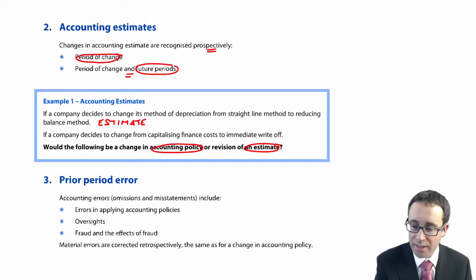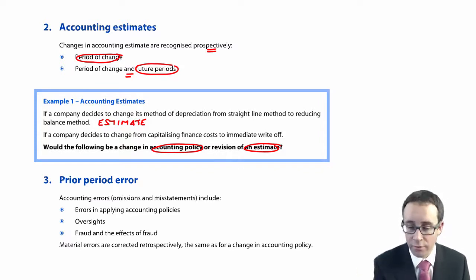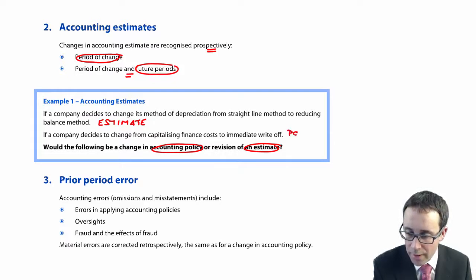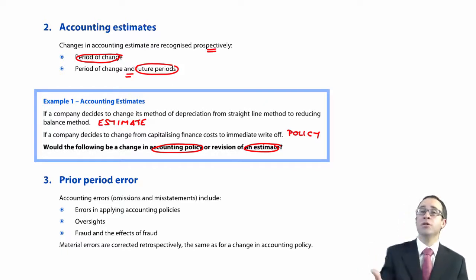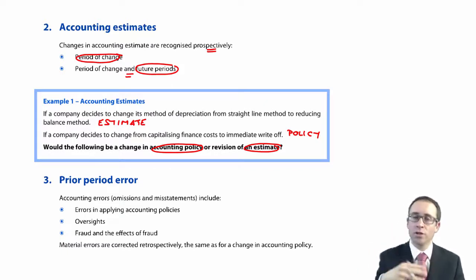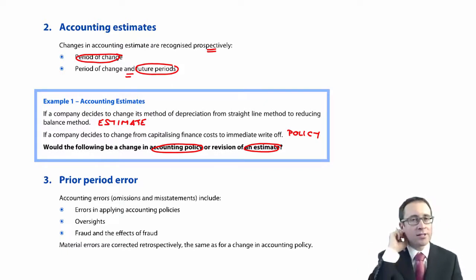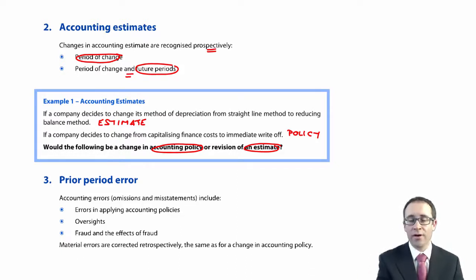The second example: if a company decides to change from capitalising to writing off finance costs — that would be a change in accounting policy. For example, if previously you had not adopted IFRS and always wrote off your finance costs, but under IFRS you must now capitalise, that is a change in accounting policy.